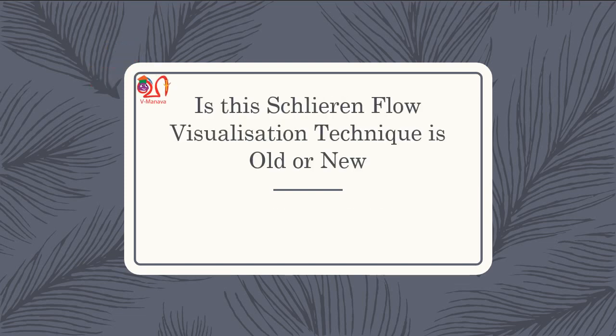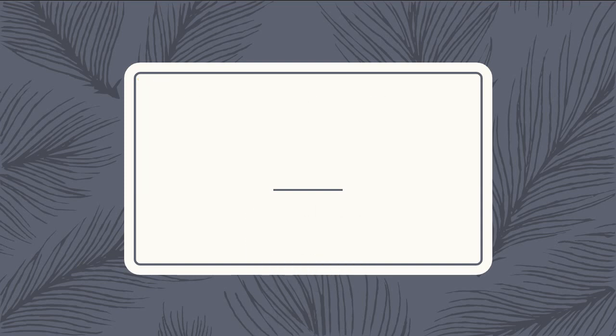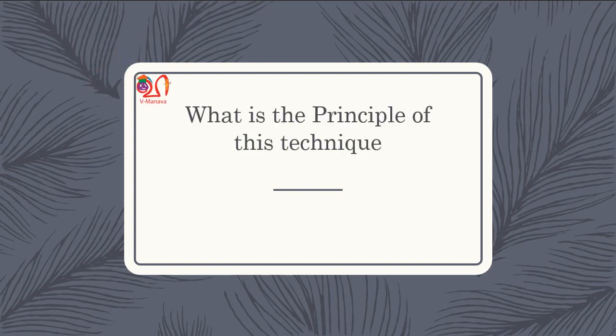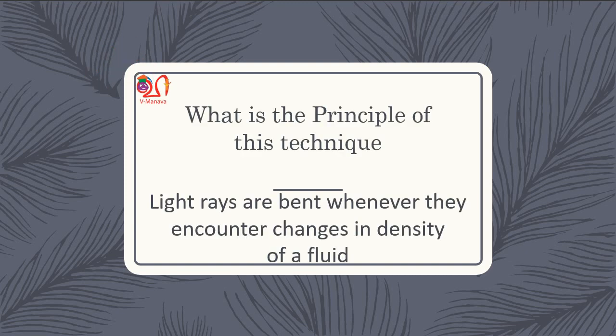Is this Schlieren Flow Visualization Technique old or new? It is a very old one. The principle of this technique: when light rays are passed through the test section, they are bent whenever they encounter changes in the density of the fluid.